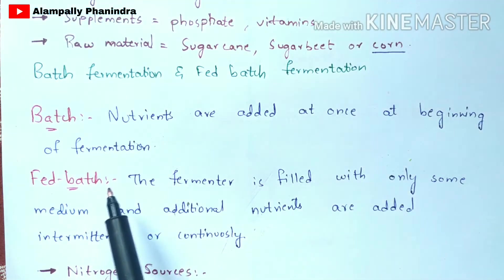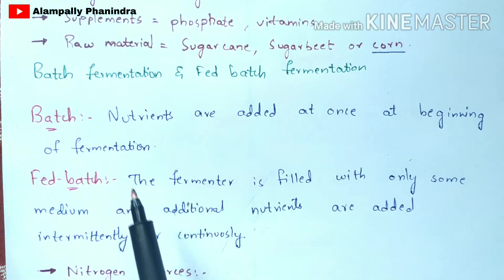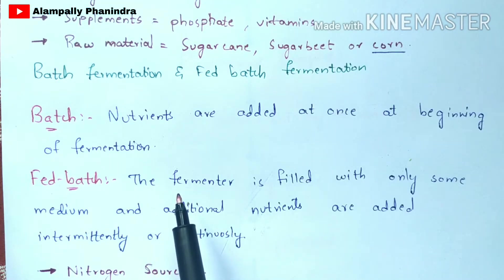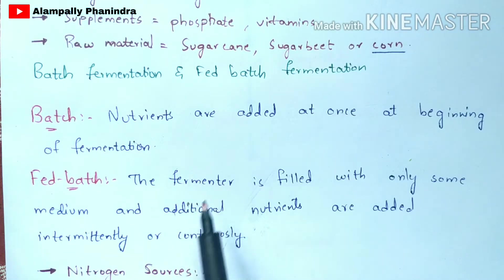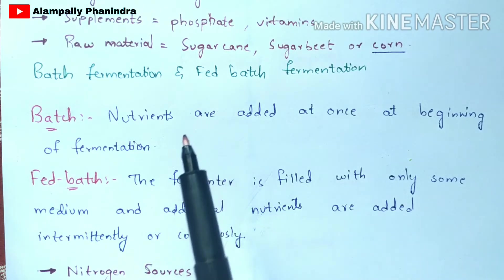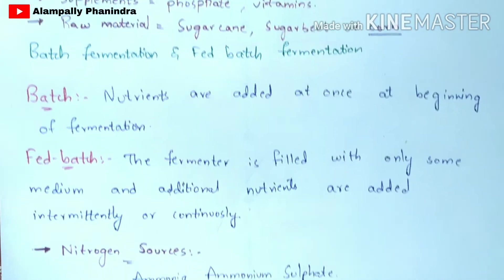In fed-batch fermentation, the fermenter is filled with only some medium at the beginning, and then additional nutrients are added continuously or intermittently during the fermentation process. The product can be obtained by either batch fermentation or fed-batch fermentation.